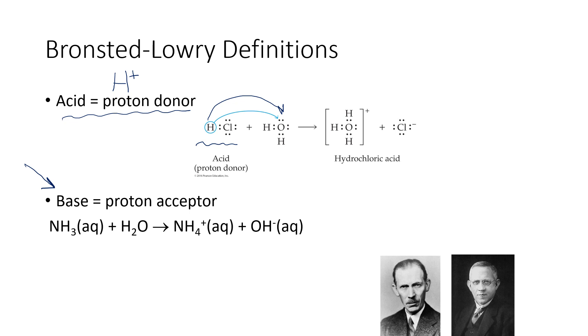So the thing about the Bronsted-Lowry definitions is that they allow us to consider more compounds to be bases. NH3, by the Arrhenius definition, can't be a base because it doesn't have hydroxide ion. But NH3 can be a base by the Bronsted-Lowry definition because it can accept a proton.